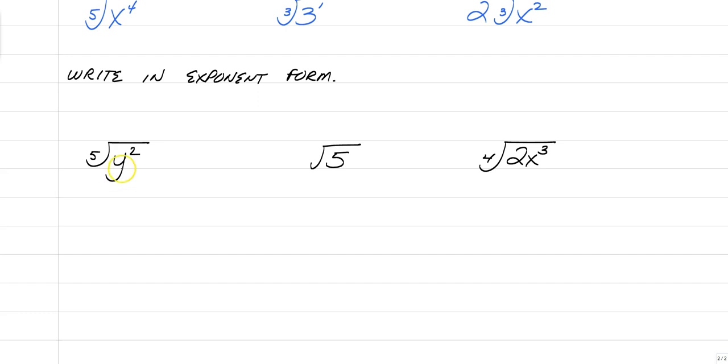Exponent form. Remember, this is the numerator, that's the denominator. So you should have y to the 2 fifths. This would be the square root. Remember, if there's no index, it's always been a 2. You can write a 2 if it makes you feel comfortable, but it's always been a square root if there was nothing written in there. So this would be 5 to the 1 half power.